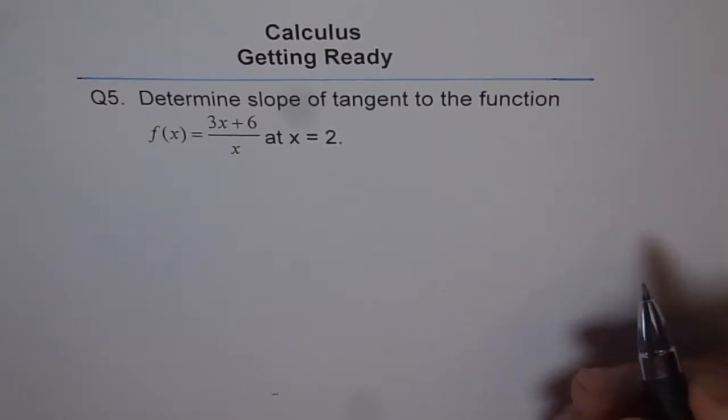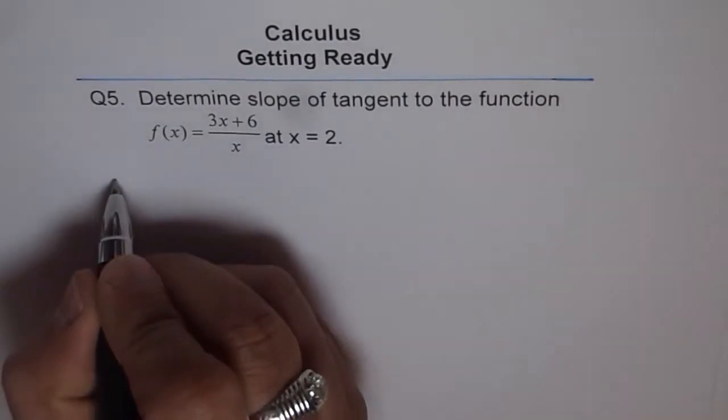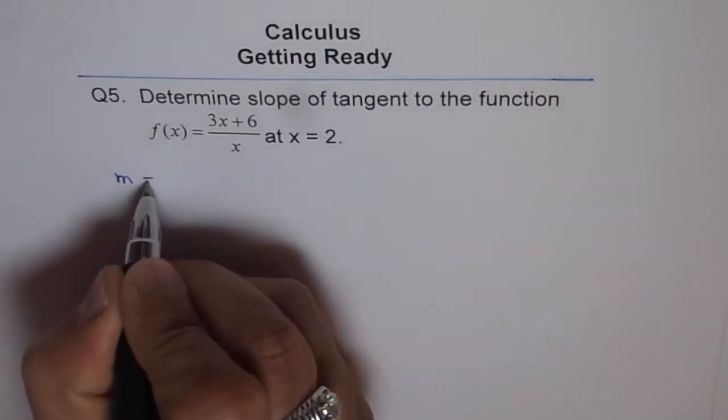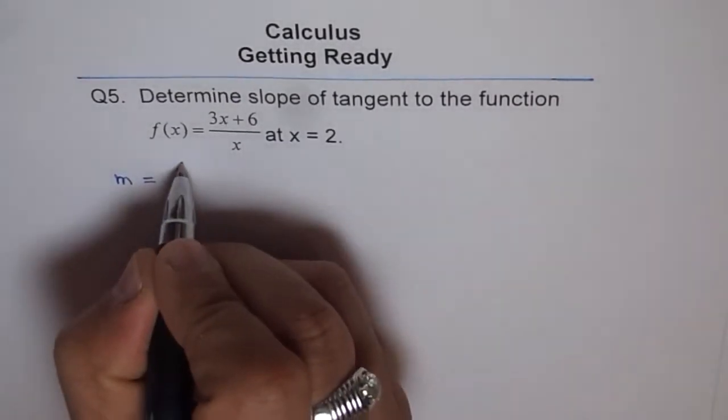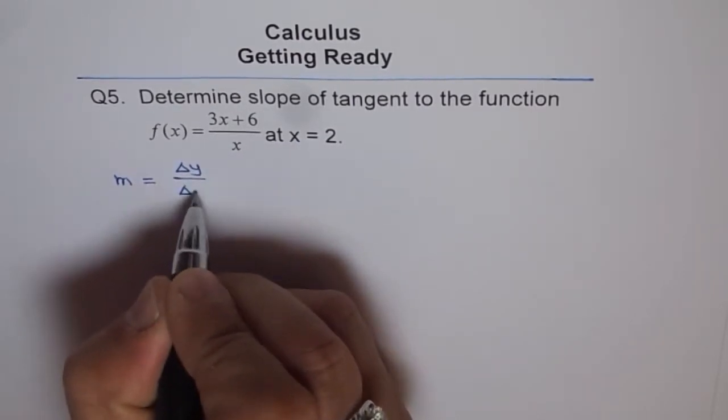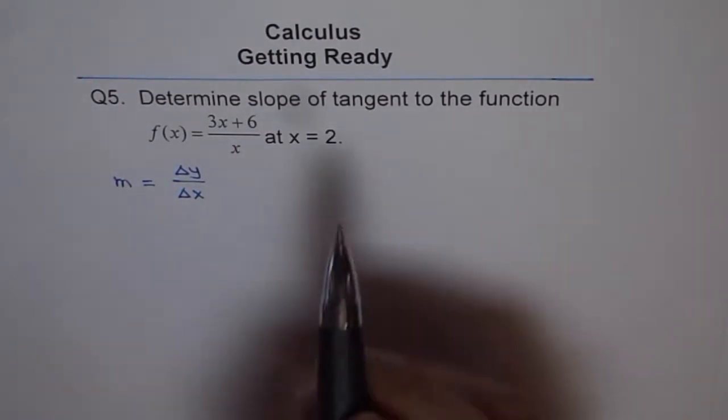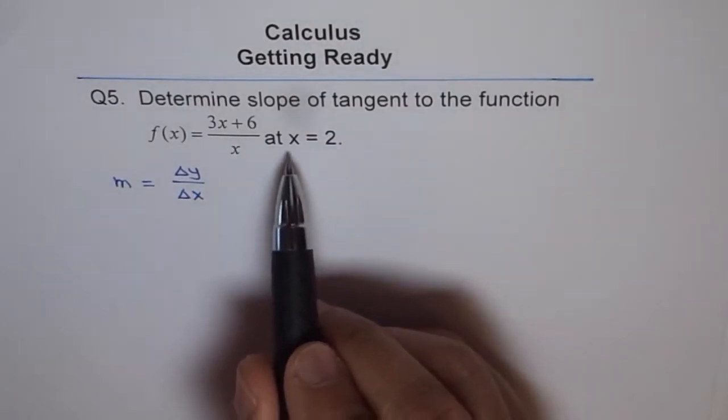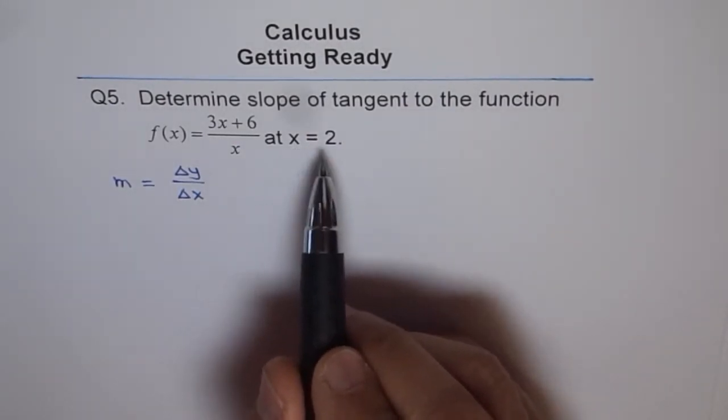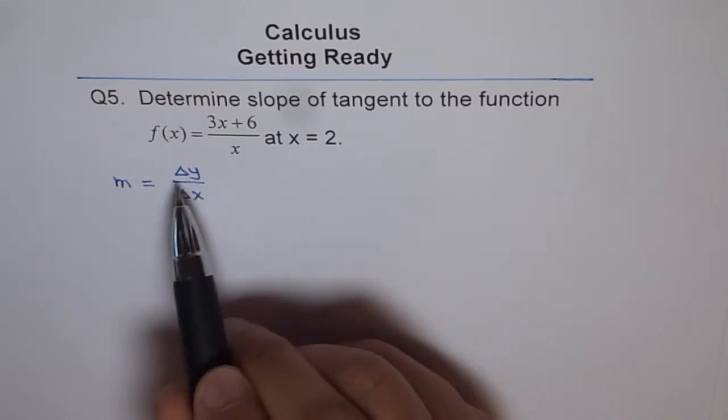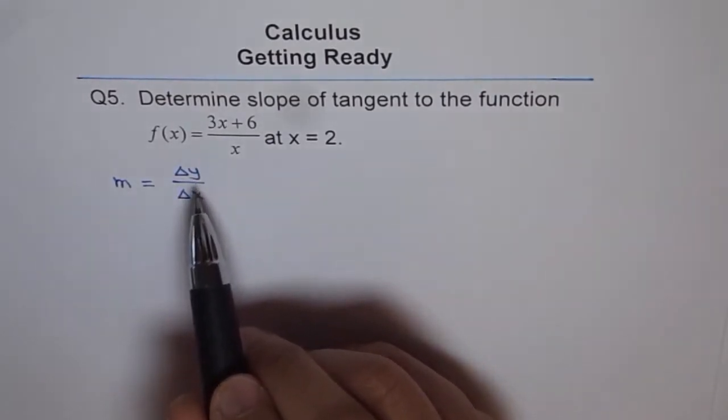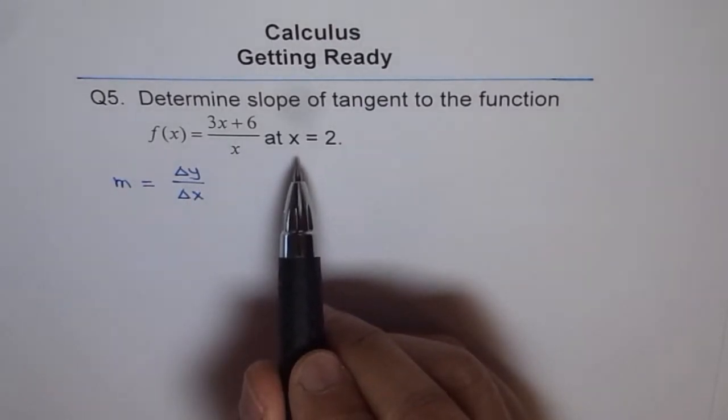Let me first show you what that method is. Slope m is change in y value over change in x value, right? That's the slope of any line. When we have a tangent, and in this case it is at x equals 2, then change in y and change in x are referring to a point which is very close to the point at x equals 2.